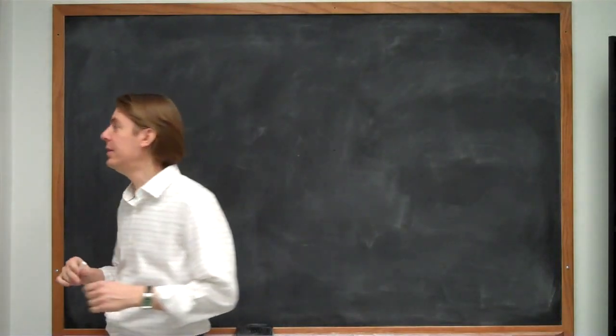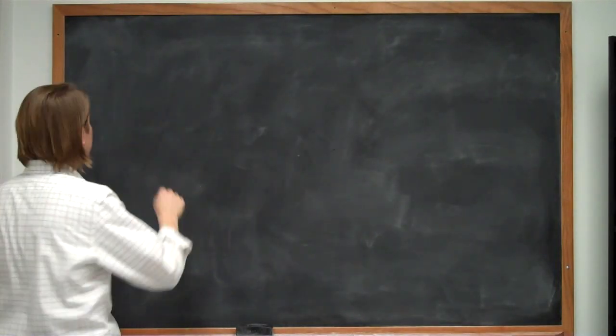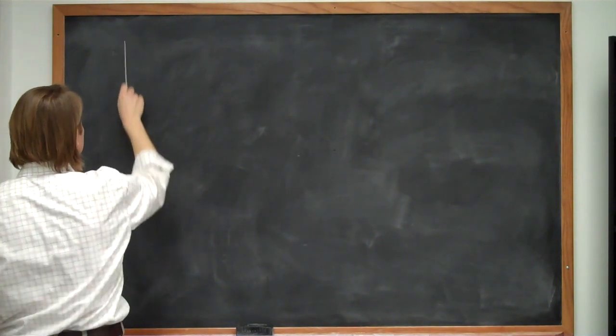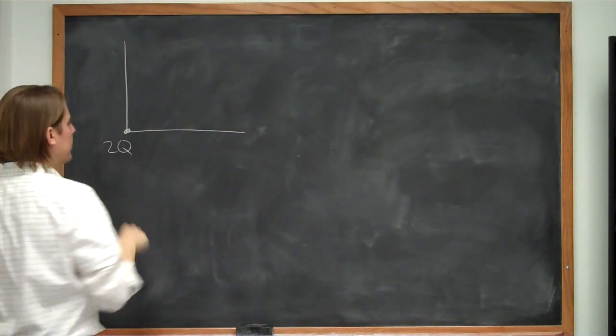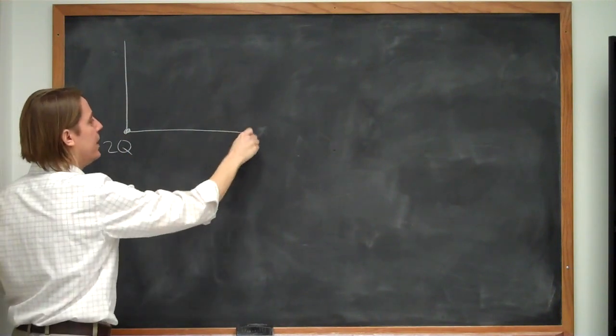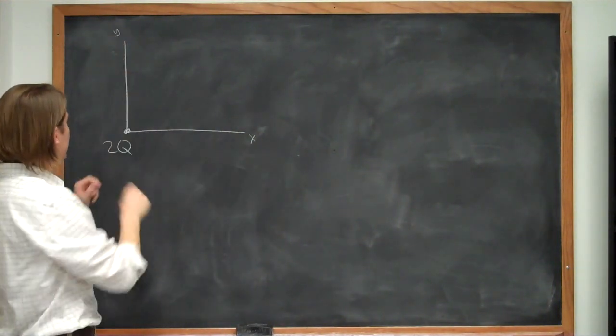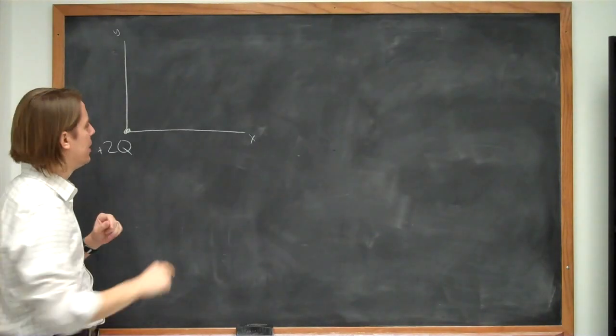Problem 2317 says that we have a charge at the origin, 2q. We'll draw a coordinate system with x this way, y this way, and put a charge plus 2q in the origin.